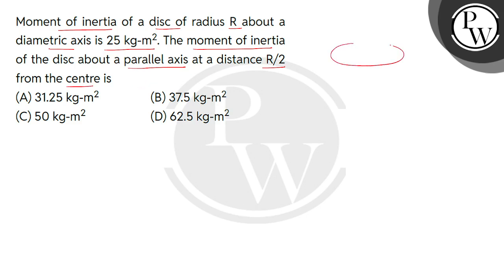We have to consider a disc. Let's consider O as the center of this disc and AB as the diameter. When the disc rotates about axis AB, the given moment of inertia is I_dia equals 25 kg-m². If the disc has mass m and radius R, we can express this as mR² divided by 4.